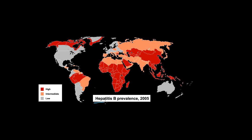This is hepatitis B prevalence from around 2005. Red demarcates high areas of prevalence, orange intermediate, and gray low. High is about a prevalence of 7% in the general population, intermediate is about 2% to 7%, and low is less than 2%. Sub-Saharan Africa and parts of Asia have very high prevalence of hepatitis B.